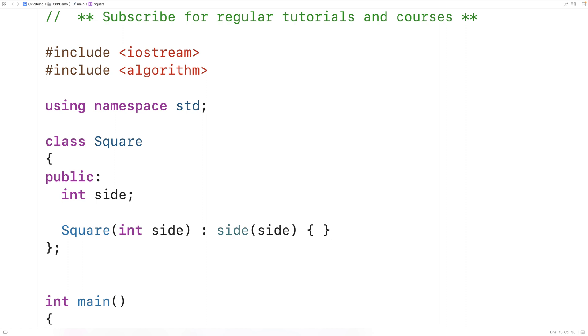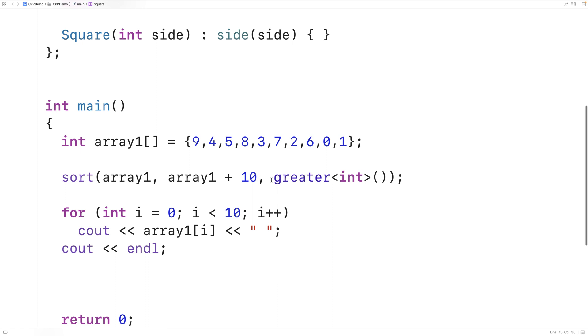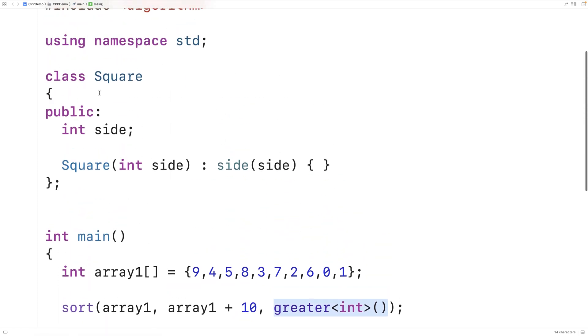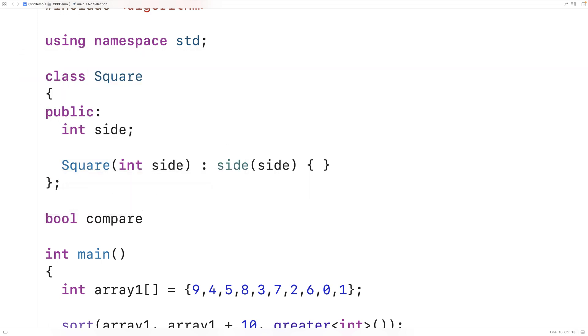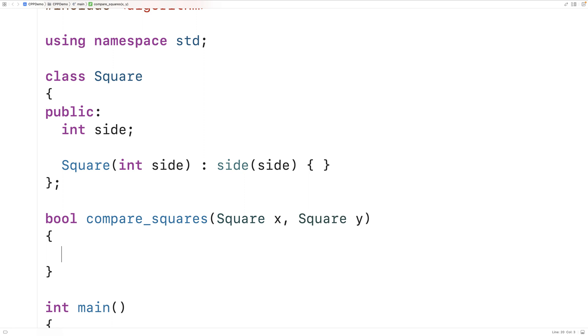How could we sort square objects using the sort function? One way we can do that is by providing a third argument to the sort function. And our third argument is going to be a function we define. And that function will decide how to compare these square objects. The function has to return a true or false bool value. So we'll say bool and we'll call it compare_squares. And the function will accept two squares as arguments. So we'll say square x and square y. And the function has to return true or false.